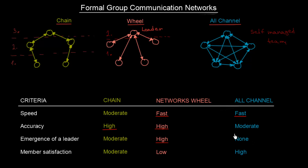Under the all channel network there is no leader, because self-managed teams basically work without supervisors or leaders within the team. Finally, there is member satisfaction. The most satisfied team members are going to be under the all channel network, because they are free to talk with anyone. However, the least satisfaction is going to be under the wheel network, because each member has only one person for communication.